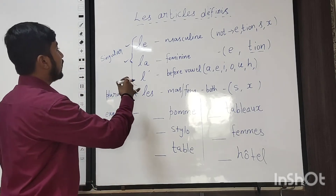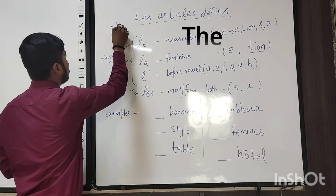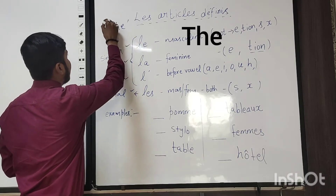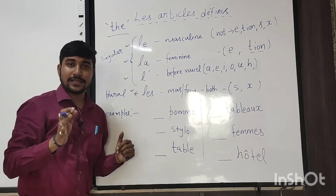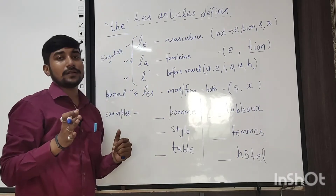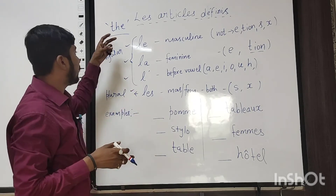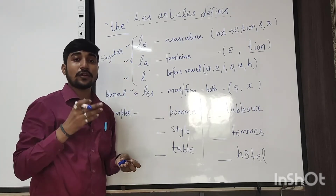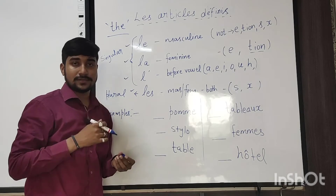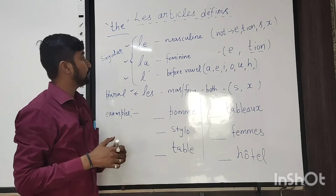Basically, the meaning of definite articles is 'the.' Like in English we have 'the,' which is also a definite article. In the same way, 'the' is divided into four different articles according to gender in French.